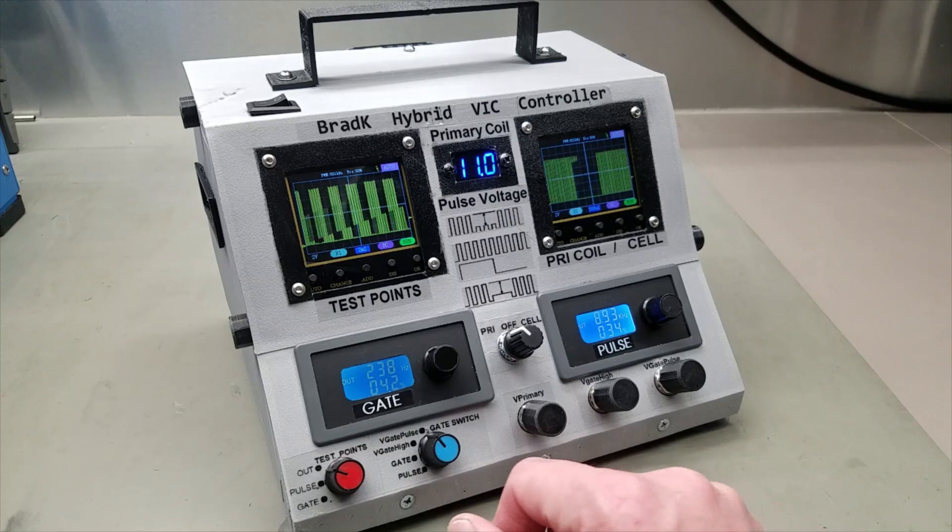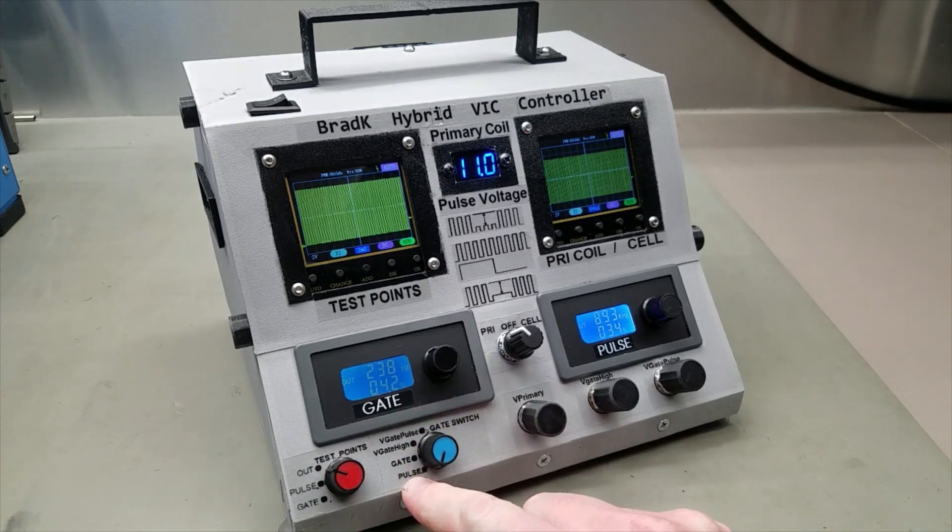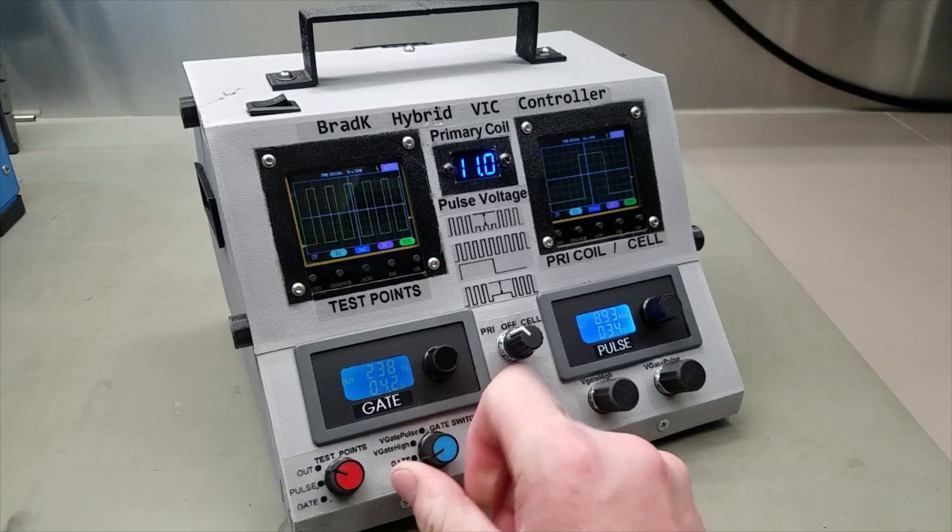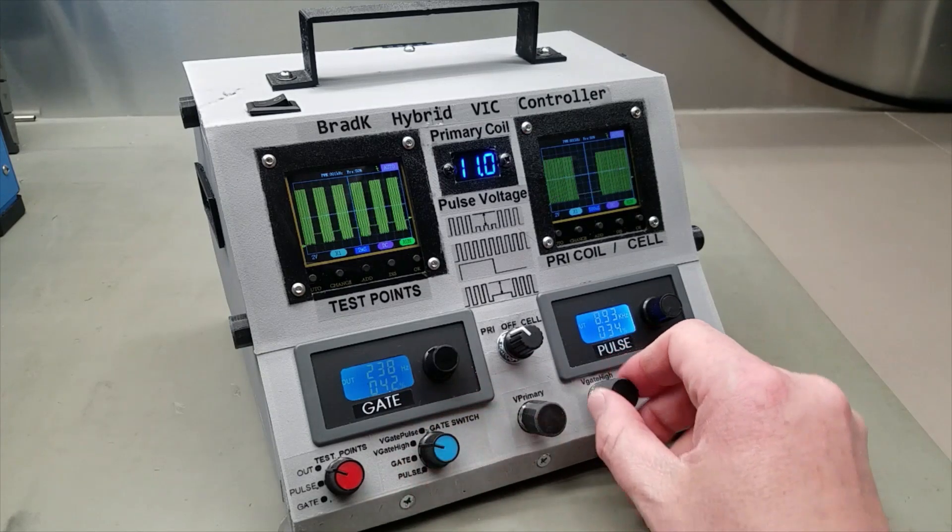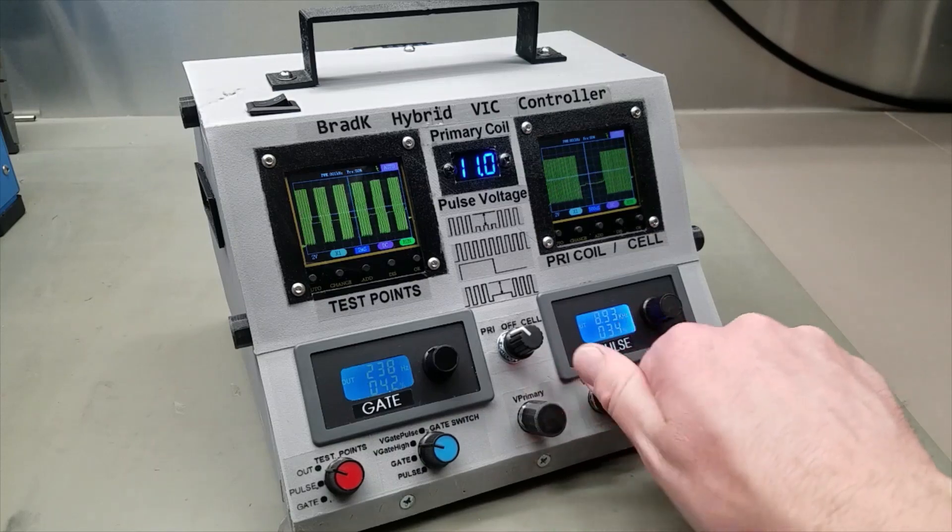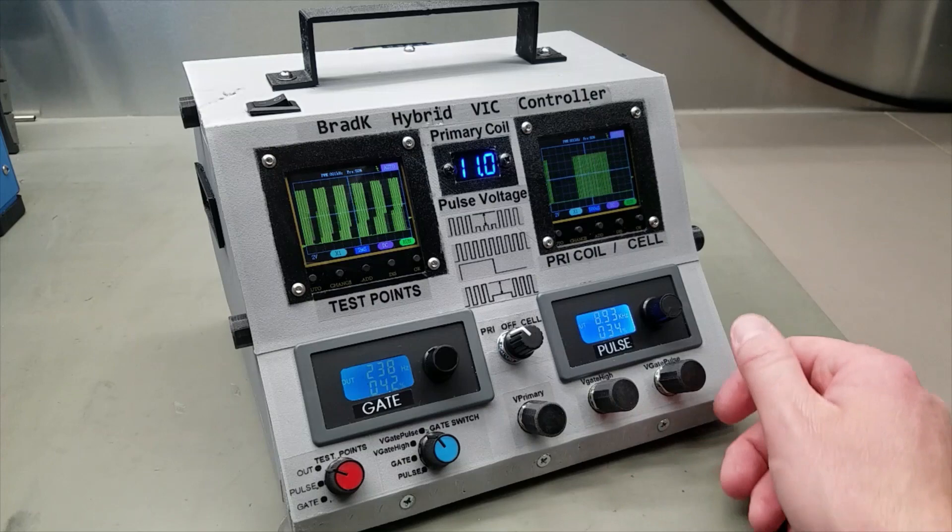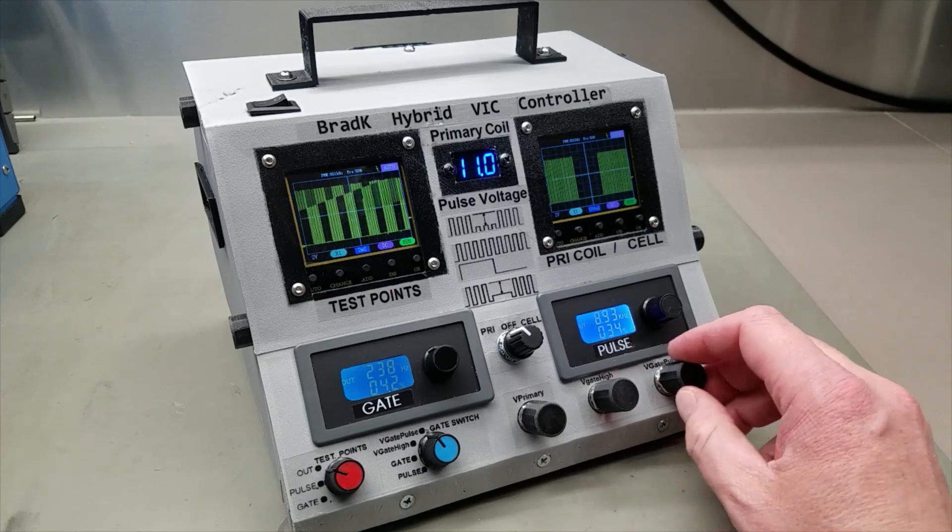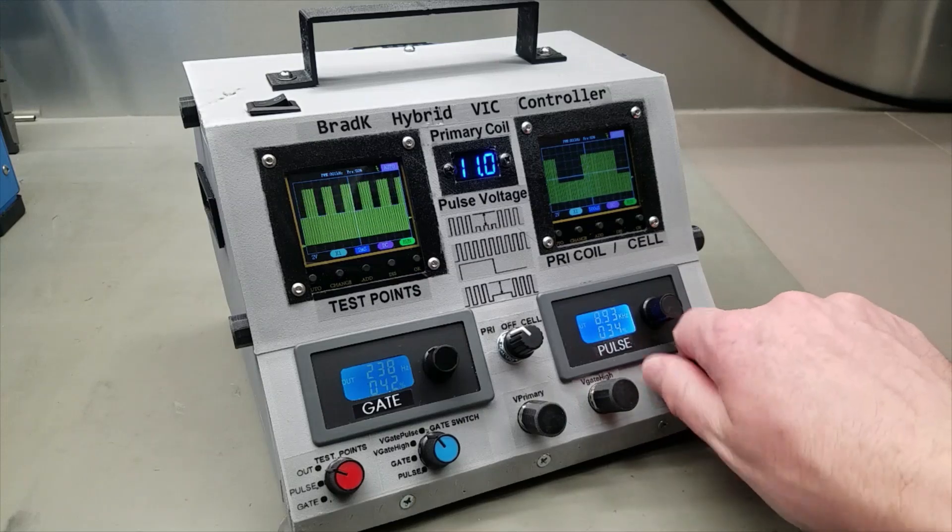Those are the signals available at the VIC. We can have it just on the pulse. The gate. Gated pulse train with adjustable high gate period. A gated pulse train with a low gate period. Or a gated pulse train with a variable amplitude pulsing during the gate period.